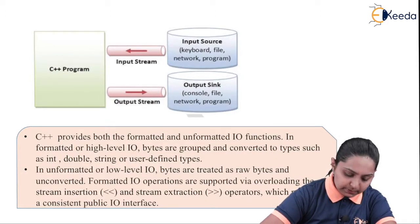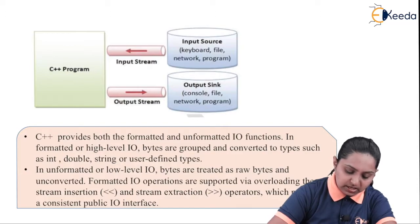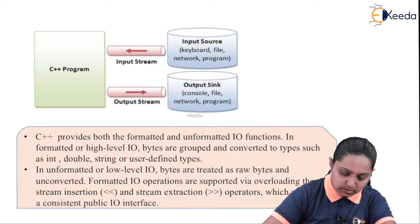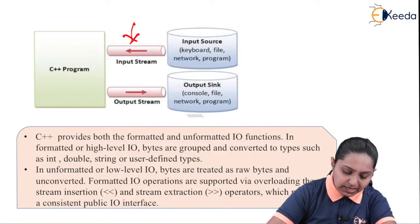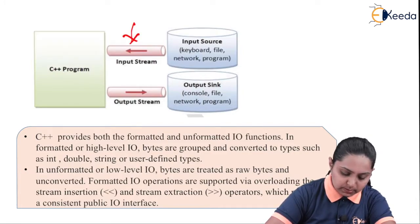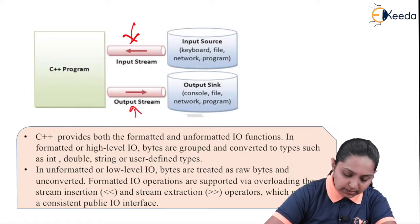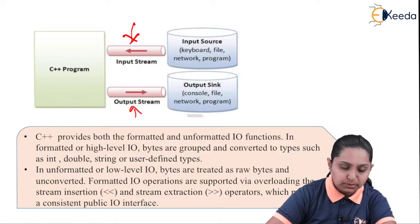Looking at this diagram, this is the C++ code. This is the input source and this is the output source. Through the keyboard, file, or program, with the help of input streaming, we can get the data into the C++ program. And through this program, we can provide the output stream to the console, file, network, or another program.